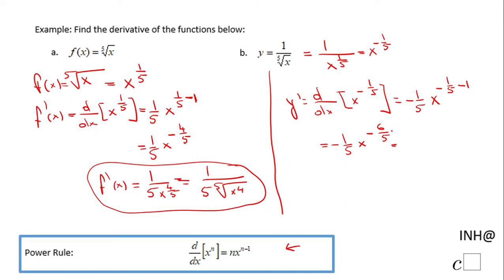First of all I'm gonna have negative 1 over 5 times x to the power of 6 over 5, which is a very good answer. Also you may want to have this form: negative 1 over 5 and then we have the fifth root of x to the 6.